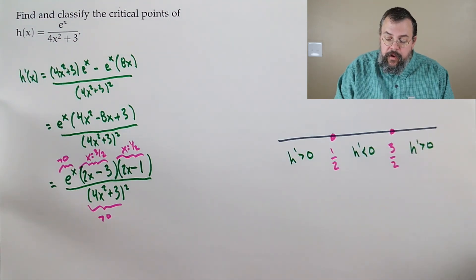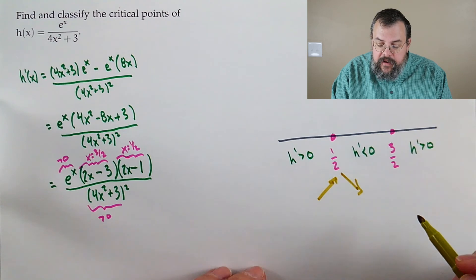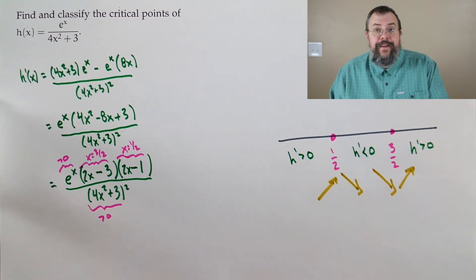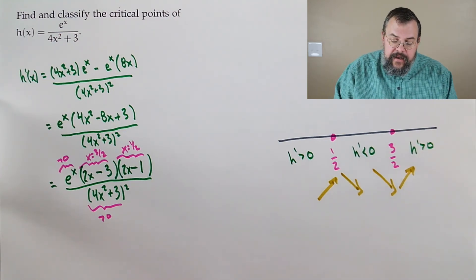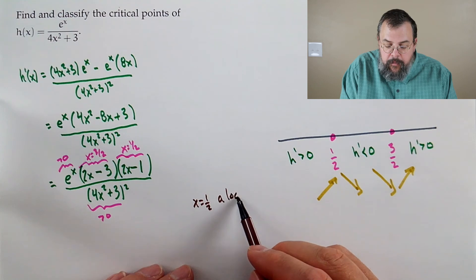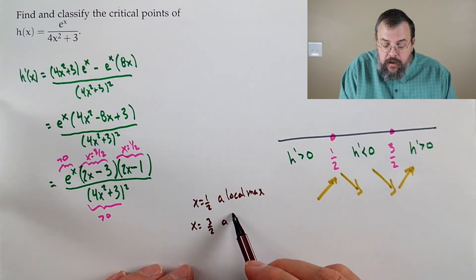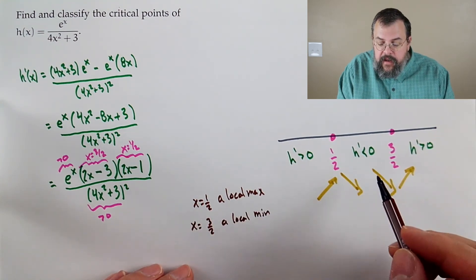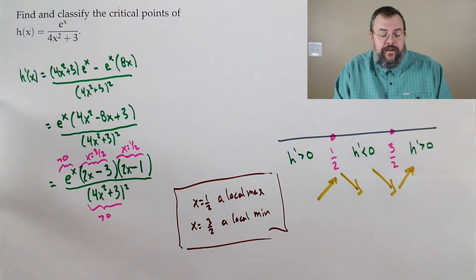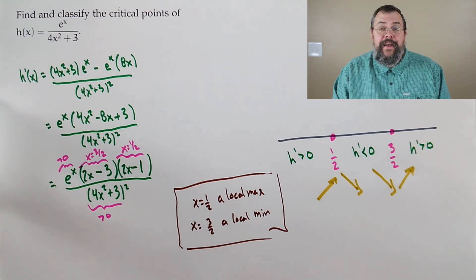We see: positive going up, negative going down, positive going up. So x equals 1/2 is a local max because we went up then down, and x equals 3/2 is a local min because we went down then up. We've classified all the critical points — that's all we needed to do. Keep working, you're doing a great job, keep it up, and we'll see you again.